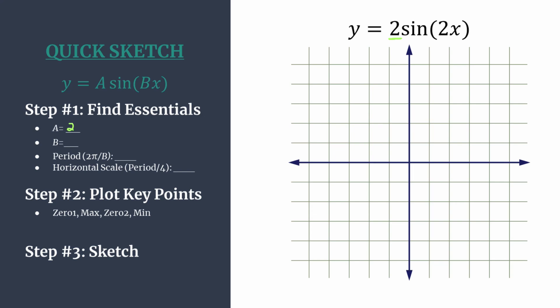b is the coefficient of x. In this case it's also 2, and that helps us find the period of our graph, or the length of one horizontal cycle. Use the formula 2π over b. So 2π over 2 gives us π as the length of one horizontal cycle.